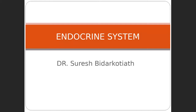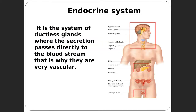Today we are discussing the endocrine system. In our body, there are many secretions produced that help with maintenance and development. These secretions are released by hormones called endocrine hormones. We will study their anatomical structure, blood supply, position, and clinical significance.